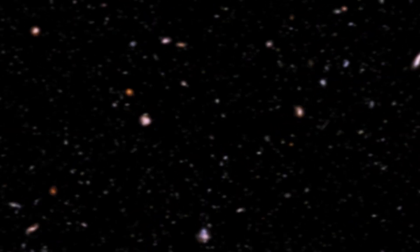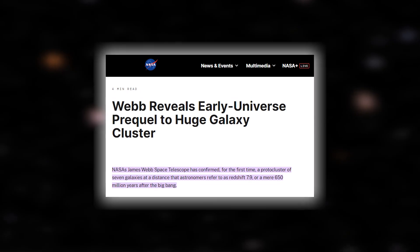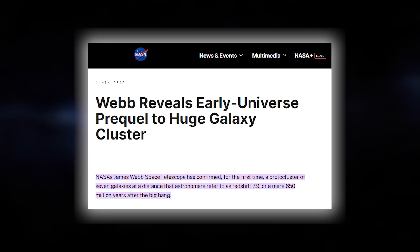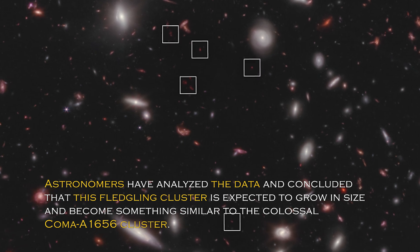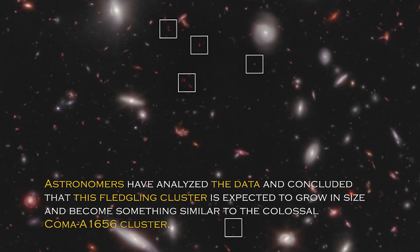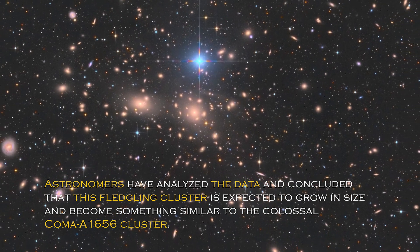Despite this, NASA recently tweeted about a galaxy cluster that lies just 650 million years after the Big Bang, adding another intriguing piece to the puzzle. Astronomers have analyzed the data and concluded that this fledgling cluster is expected to grow in size and become something similar to the colossal Coma A1656 cluster.